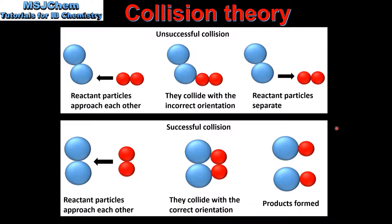The difference between these examples is that in the first one the reactant particles collide with incorrect orientation and no chemical reaction takes place. In the second example the reactant particles collide with the correct orientation, resulting in a chemical reaction.